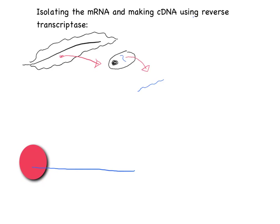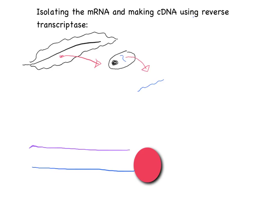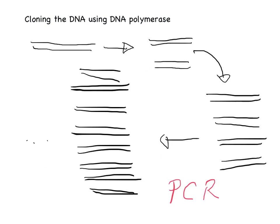The enzyme reverse transcriptase jumps onto the mRNA transcript and travels along it. As it's doing that, it creates a single strand which is cDNA. This cDNA is then polymerized using DNA polymerase. So the cDNA is then copied, like normal, to make a double strand of DNA.